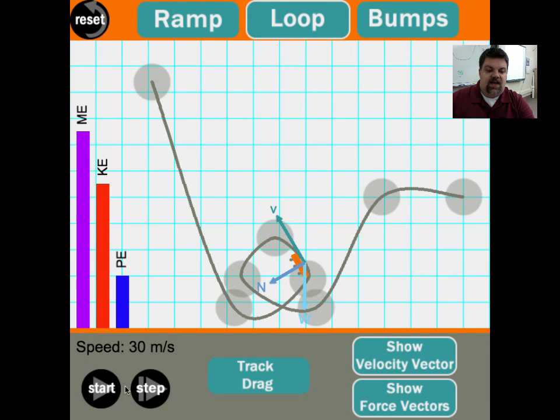So when we get to the top, what is the normal force? It's almost nothing, right? Because the velocity, the cart wants to keep going in this direction, and the track is redirecting it, so the cart is literally pushing down on the track, which is why we are able to go upside down on a loop.